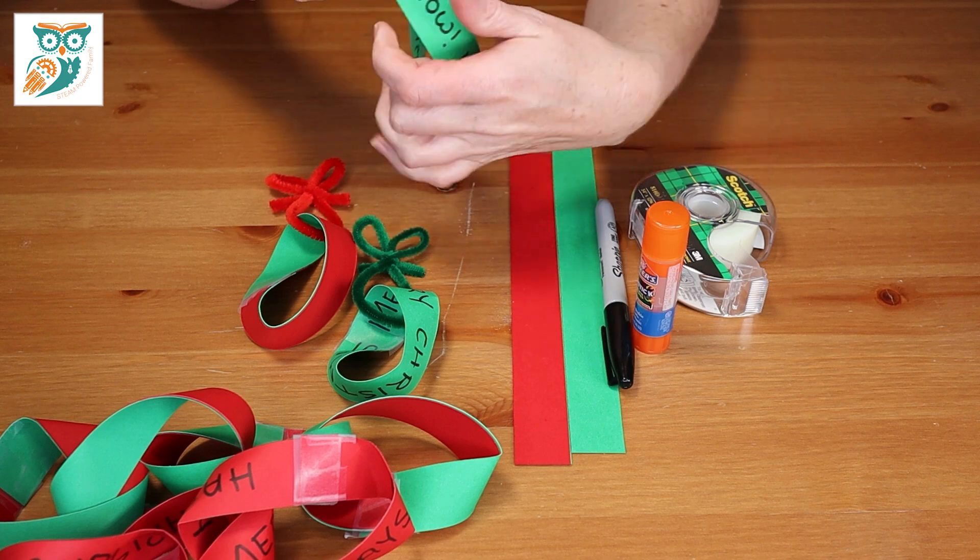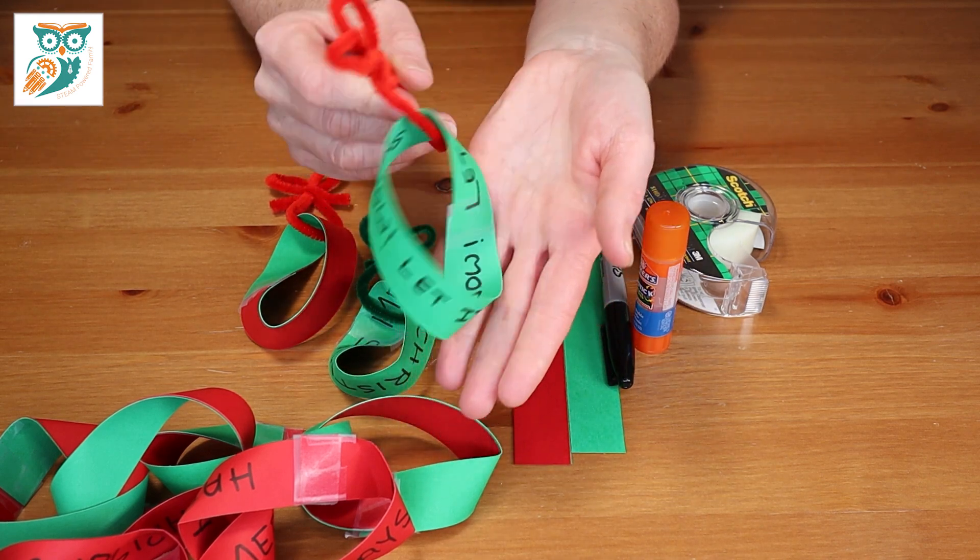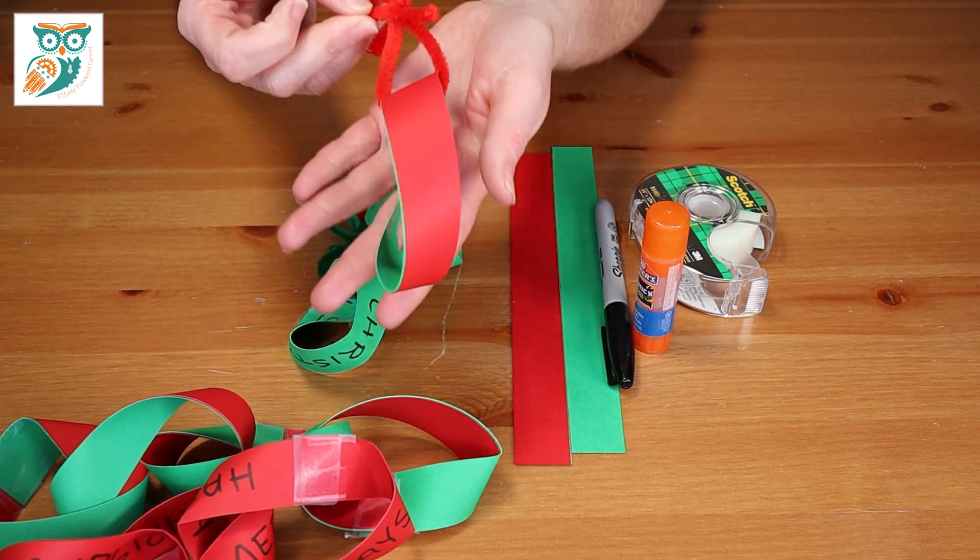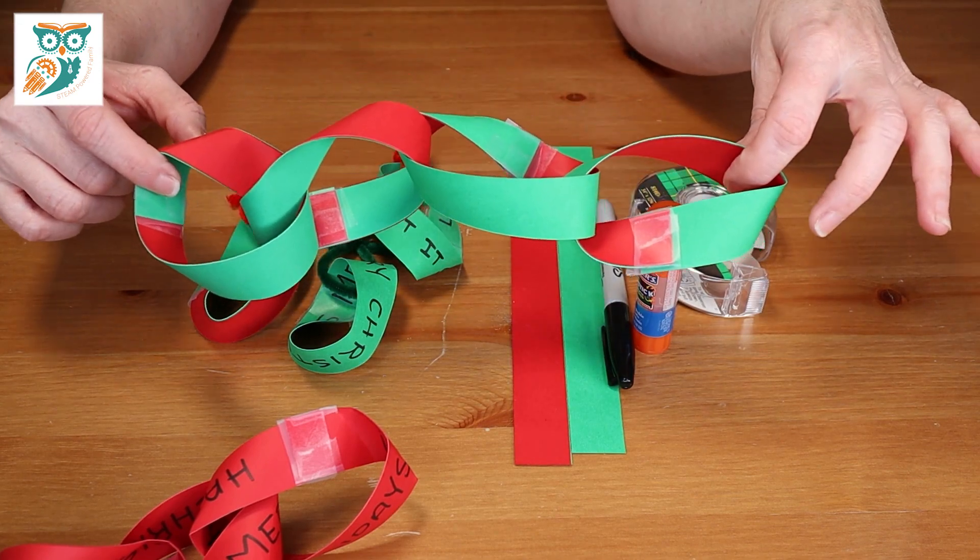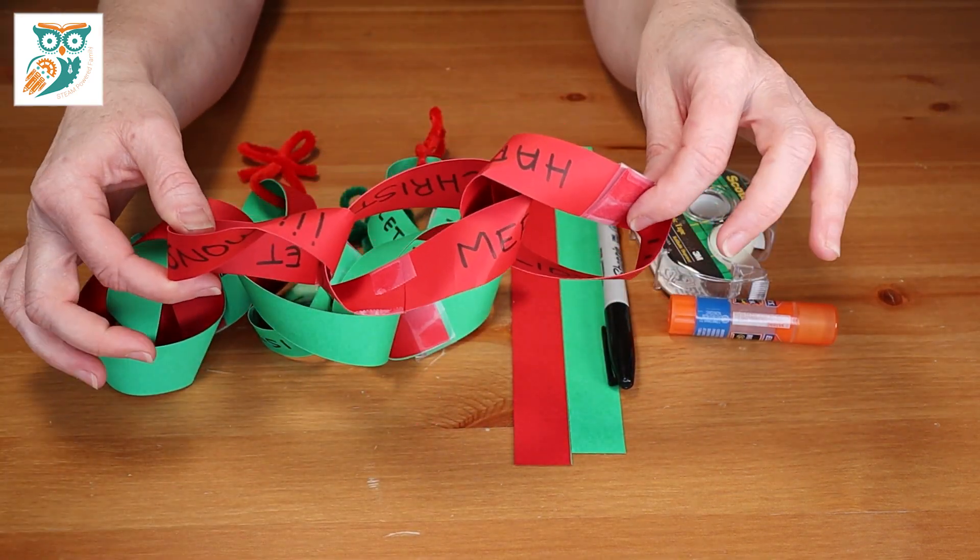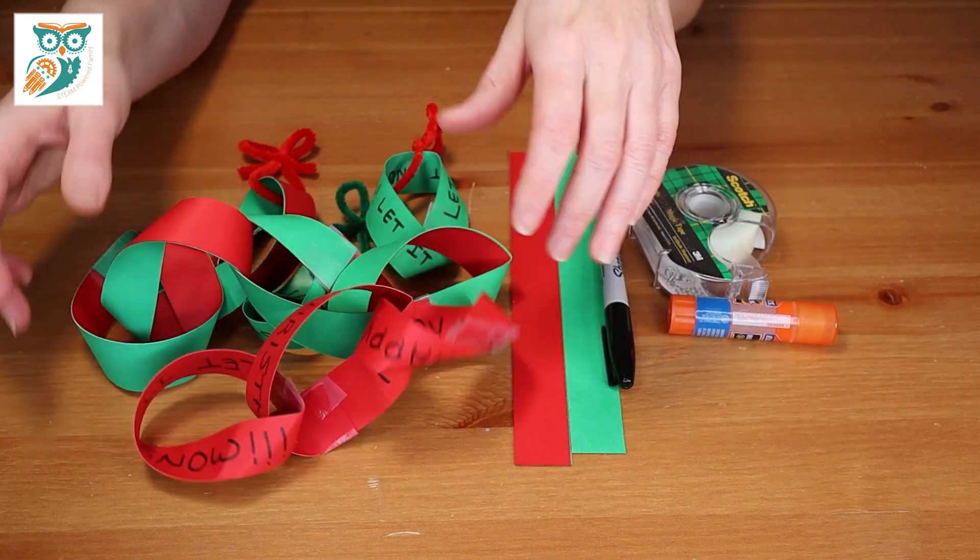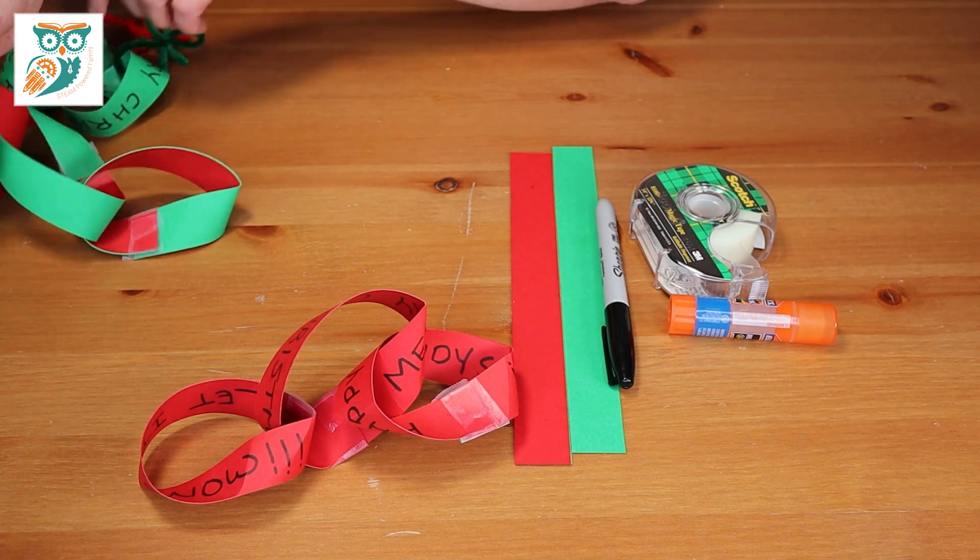So here's an example of the ornament that we are making. We also did a two color one and then we're also making garlands with little festive messages on them. So those are our finished products. So let's dig in a little bit.